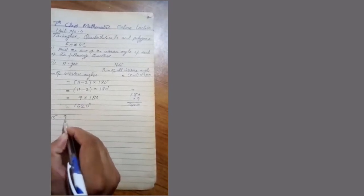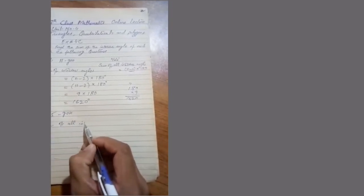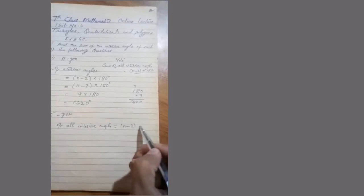Now my second question is a 15-gon. We can use the recursive formula: sum of all interior angles = (N minus 2) multiplied by 180.